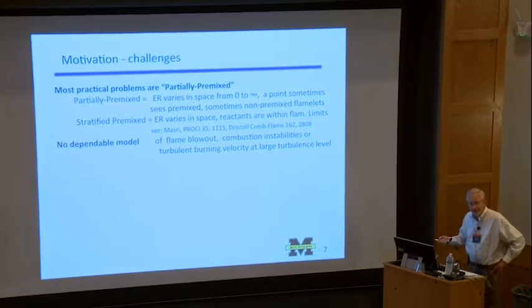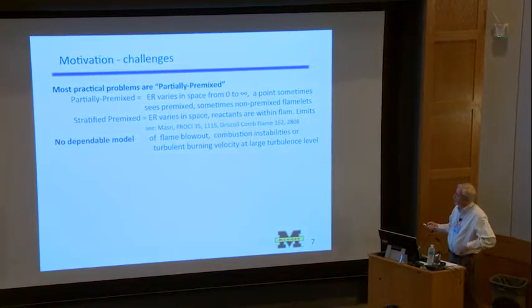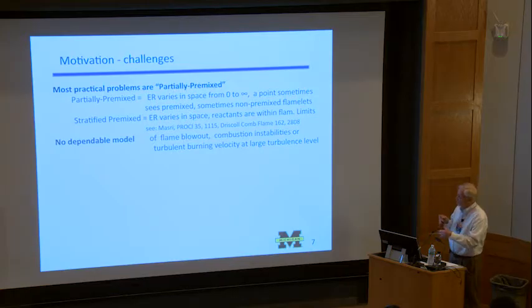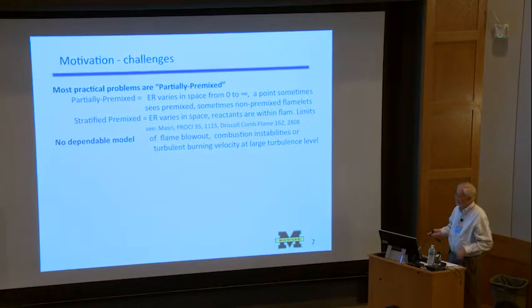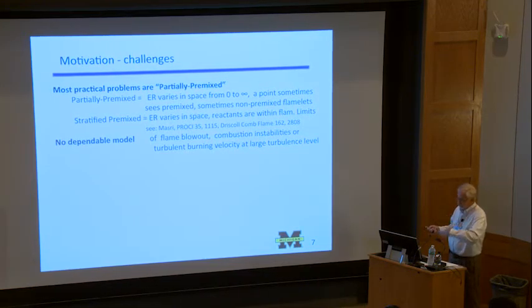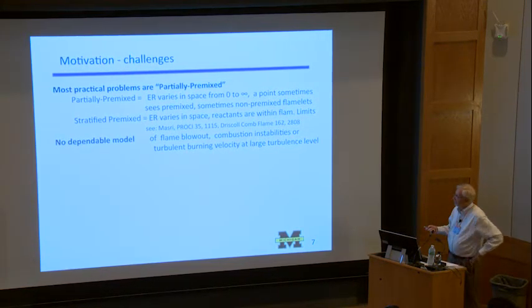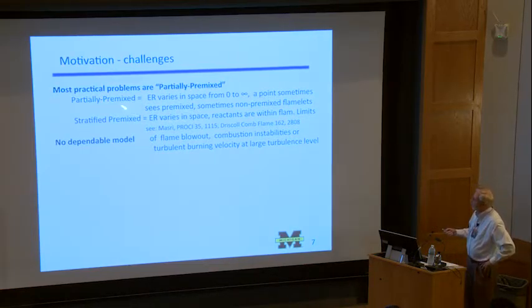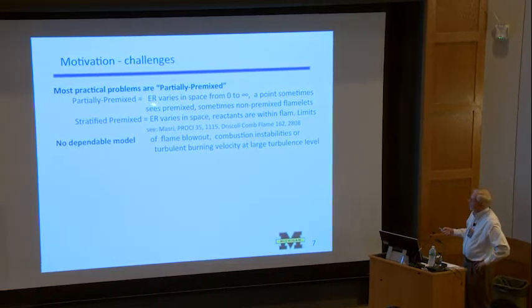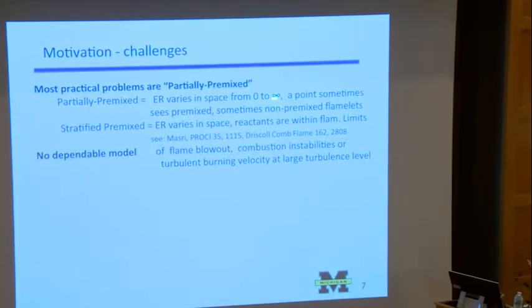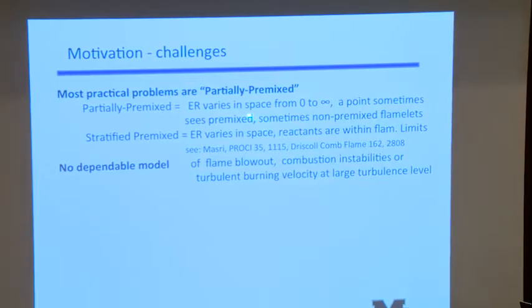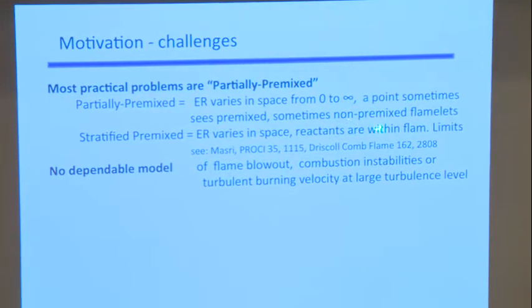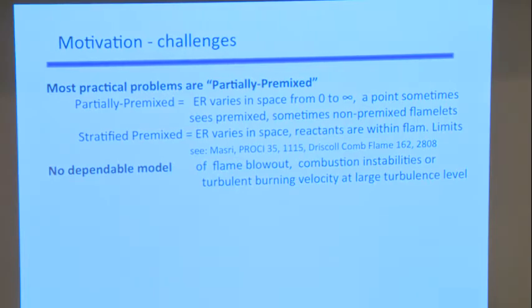It's partially premixed because you can see that one of the flames, the pilot flame, is non-premixed. And the main flame is premixed. And so they're all just sort of superimposed on top of each other. And so we're going to define partially premixed is that the equivalence ratio varies in space from pure air to pure fuel. So sometimes at a point you see premixed combustion, sometimes non-premixed. And you need to know the probability of each. Because if you're modeling them, okay, you put a premixed model half the time and a non-premixed model half the time, and maybe you get the right answer.